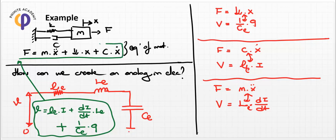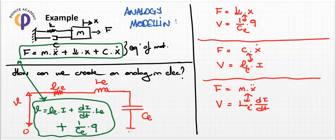If you solve this electrical equation for its time response, you have also obtained the time response of the mass-spring-damper system, as defined by analogy modeling. We don't need to work directly with mechanical elements — everything can be written in electrical format because the time results are identical to the mechanical equation of motion.